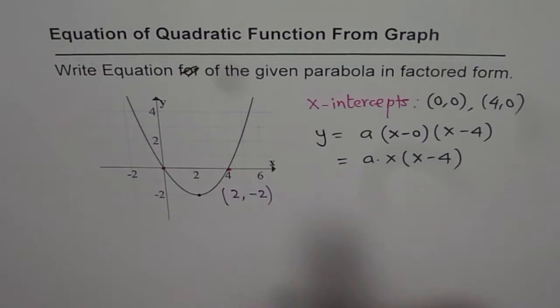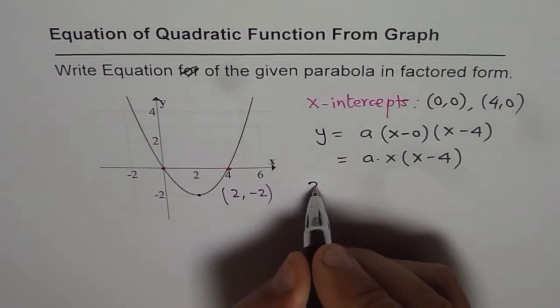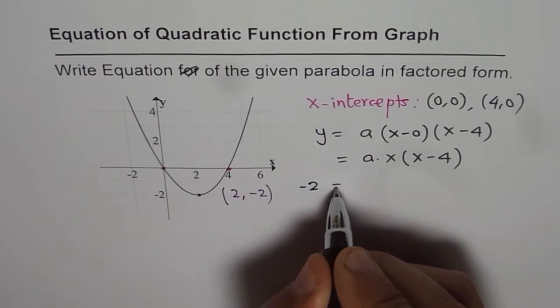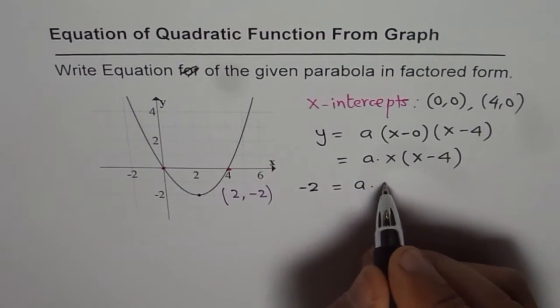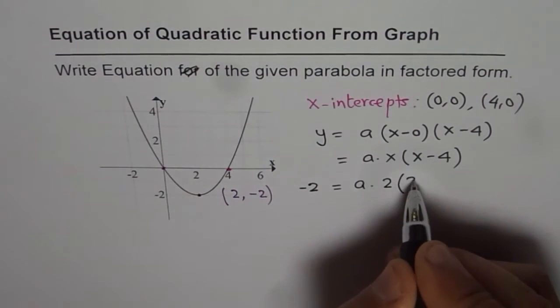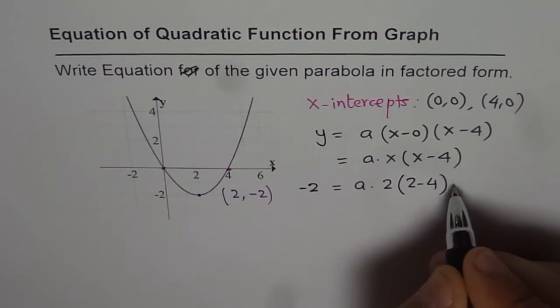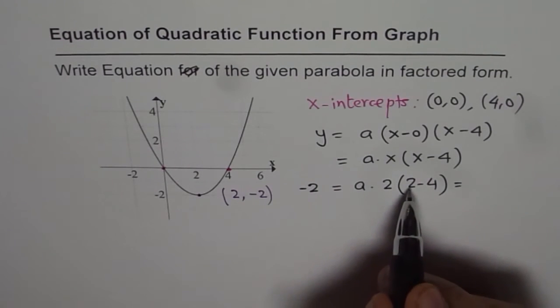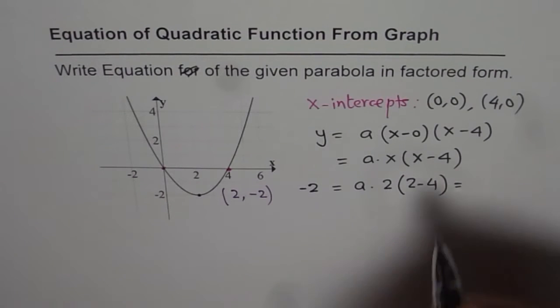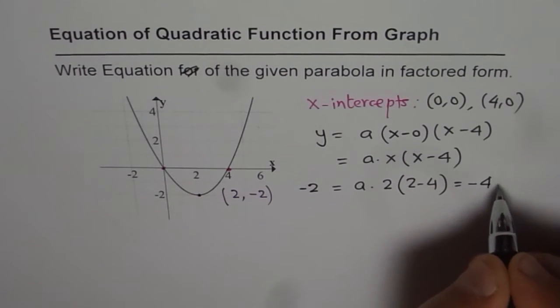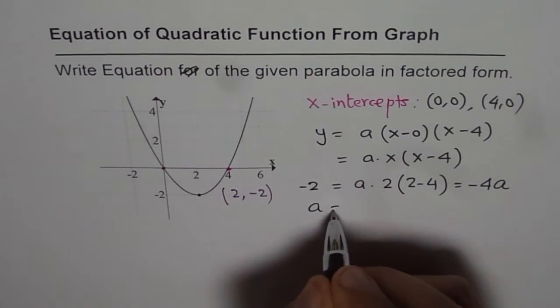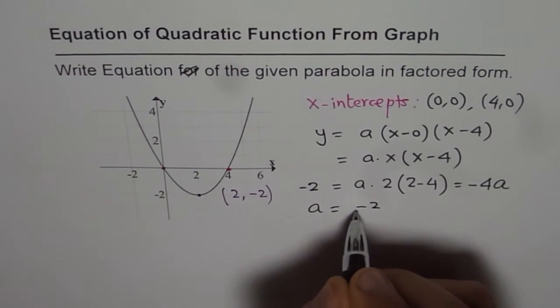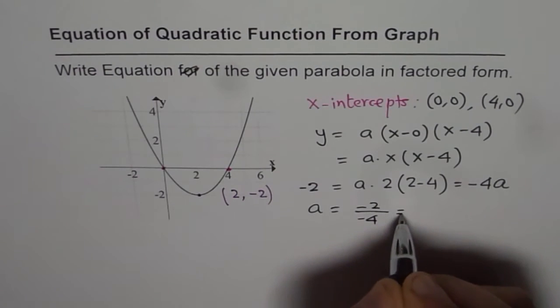So what we get is y value is minus 2. So minus 2 equals to, x value is 2, so we get a times 2 times (2 minus 4), which is 2 minus 4 is minus 2, minus 2 times 2 is minus 4. So we get minus 4a. So from here we get a equals to minus 2 divided by minus 4 and that is half.